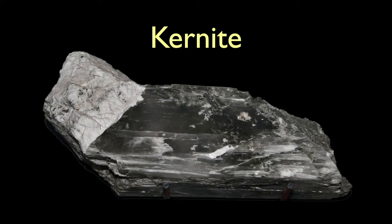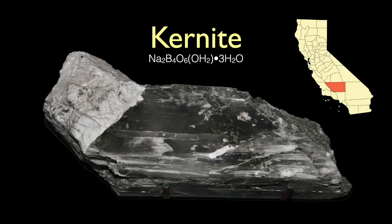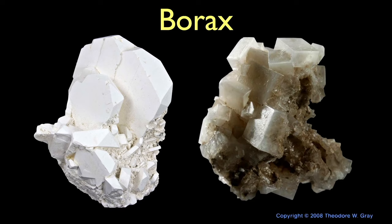Boron does not occur on the earth in its metallic form — it's always combined with other elements, mainly oxygen. The oxygen compounds are called borates. For instance, this is kernite, a hydrated sodium borate hydroxide mineral discovered in 1926 in eastern Kern County in Southern California, where it gets its name. Borax, also referred to as sodium borate, is a hydrated or anhydrous borate of sodium. Note that most of these borates are water-soluble. Where water has gathered and then evaporated, the borates concentrate in what are called evaporites. Death Valley is one such place where you find borate evaporites.